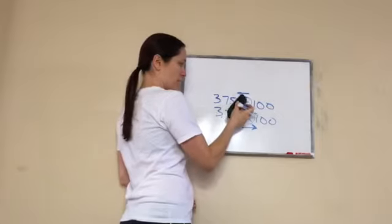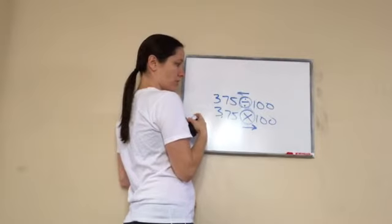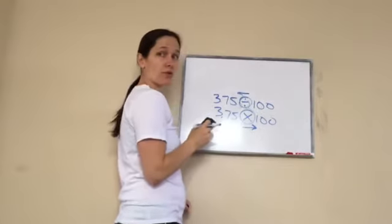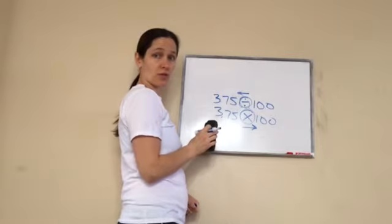This one means go to the right with your decimal. So if you want to write that down as a note in your notes, I would definitely say that. Because this definitely needs to be remembered. Division means go to the left with your decimal. Multiplication means go to the right with your decimal. Slide it to the right.